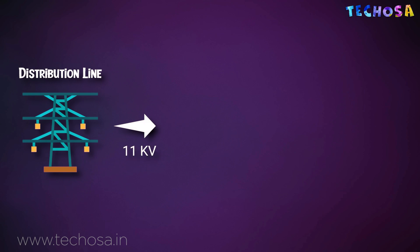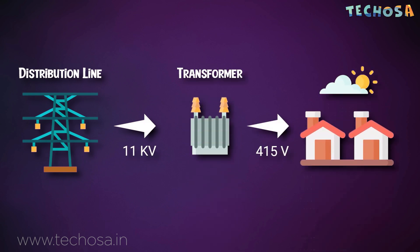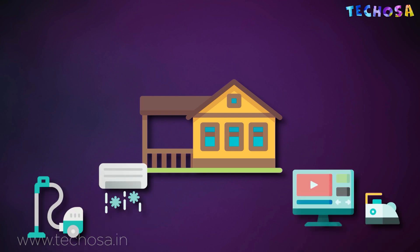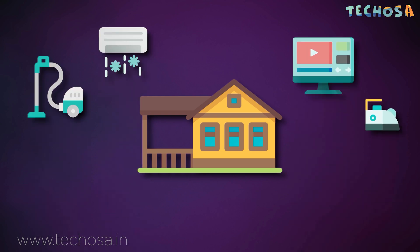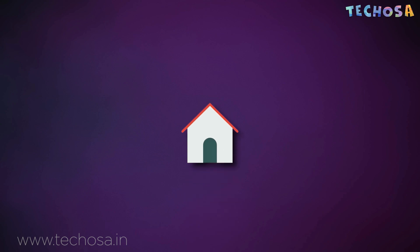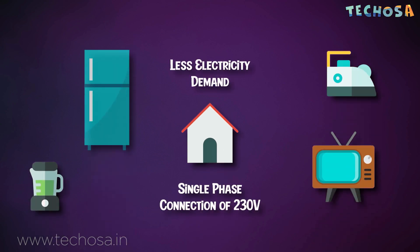From there, it goes to the distribution system. The distribution system is the part of the power system that distributes electric power to local use. It distributes 11 kV electricity to transformers that are near our homes. From the transformer, the electricity is again stepped down to 415 volts — this is the electricity that reaches a home. There are two types: three-phase connection and single-phase connection. Houses with higher electricity demand due to the use of multiple appliances will be given three-phase connection of 415 volts, while houses with lesser demand will be given single-phase connection. Small industries and small shops also use three-phase connection.